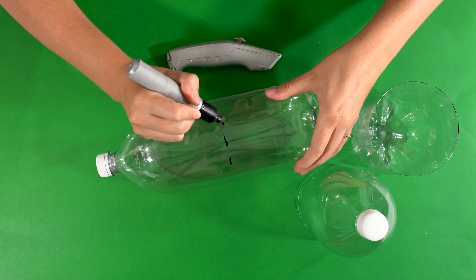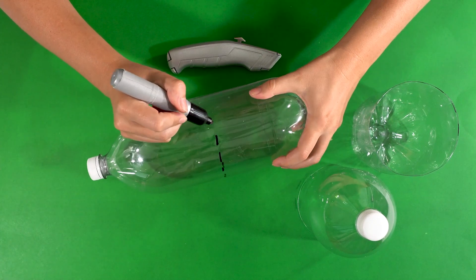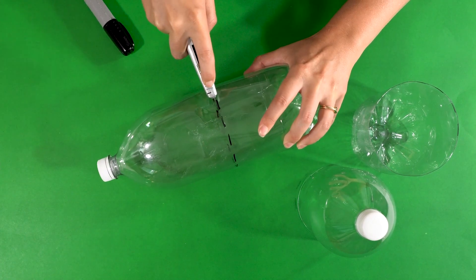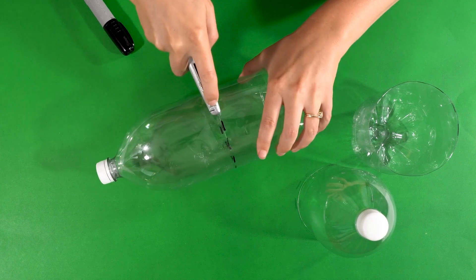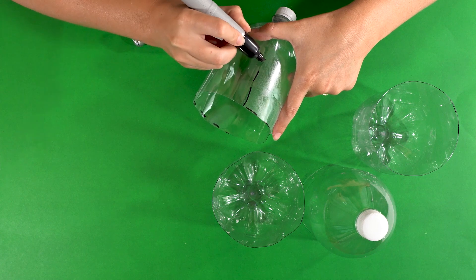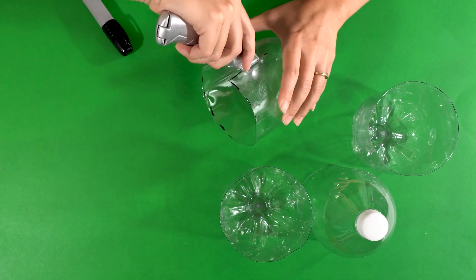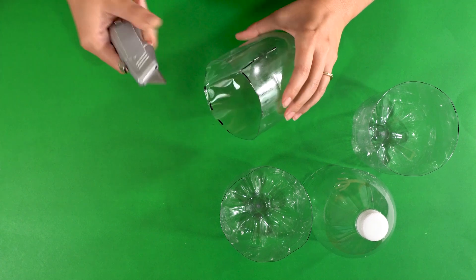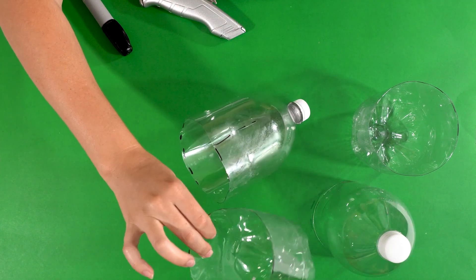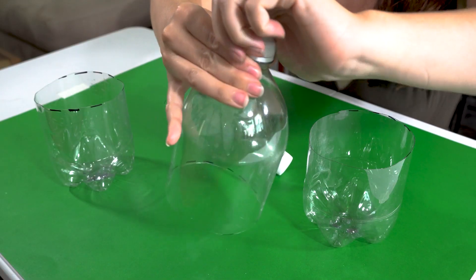Now we'll repeat that process with our second soda bottle with one additional step at the end. Again, make sure your parents are helping you with this step. We are going to make one additional cut and that's going to help our bottles fit snugly together when we assemble our mini greenhouse. Now we will go ahead and recycle this and also the cap from our first bottle.